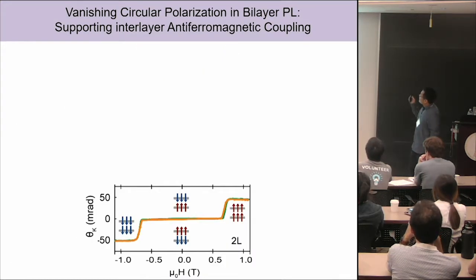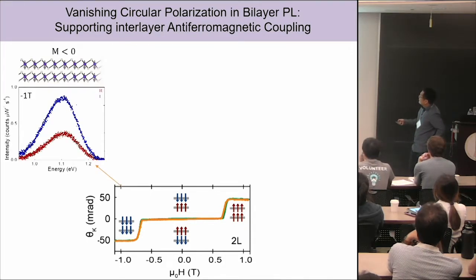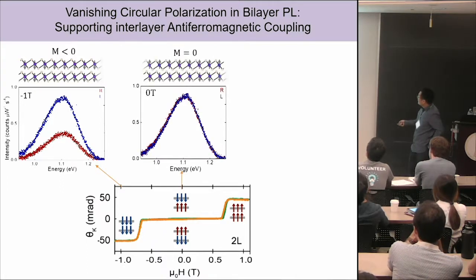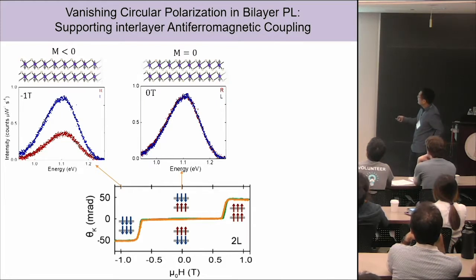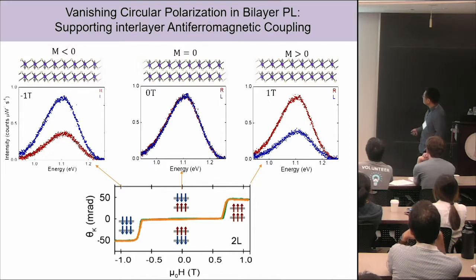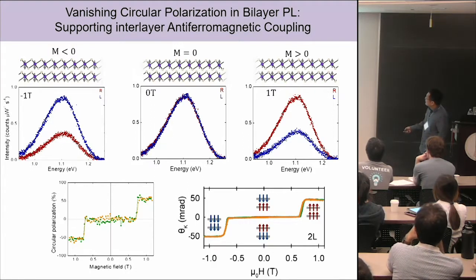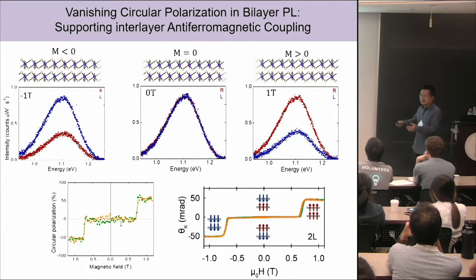We can also look at luminescence from the bilayer. At a large negative field in the antiferromagnetic state where magnetization equals zero, the spontaneous circular polarization vanishes. Applying a positive field to polarize the system brings it back. Plotting degree of polarization as a function of field, the data looks very similar to the MOKE — everything is consistent, both pointing to the same ferromagnetic order.